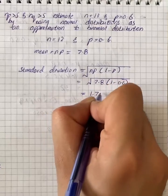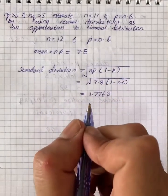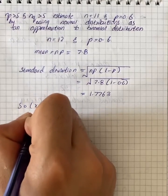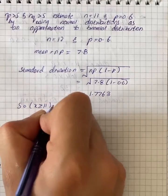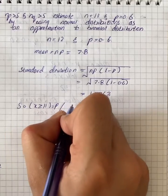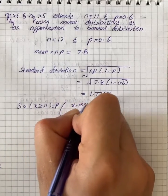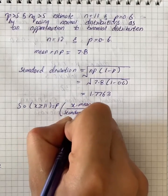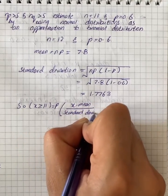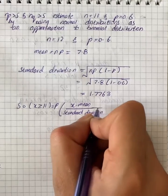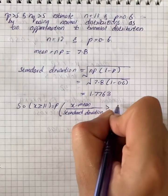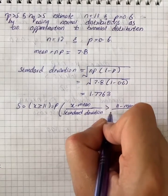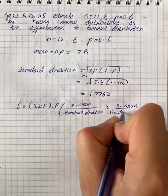So from here we know that x greater than or equal to 11 is equal to p into x minus mean divided by standard deviation is greater than 11 minus mean divided by standard deviation.